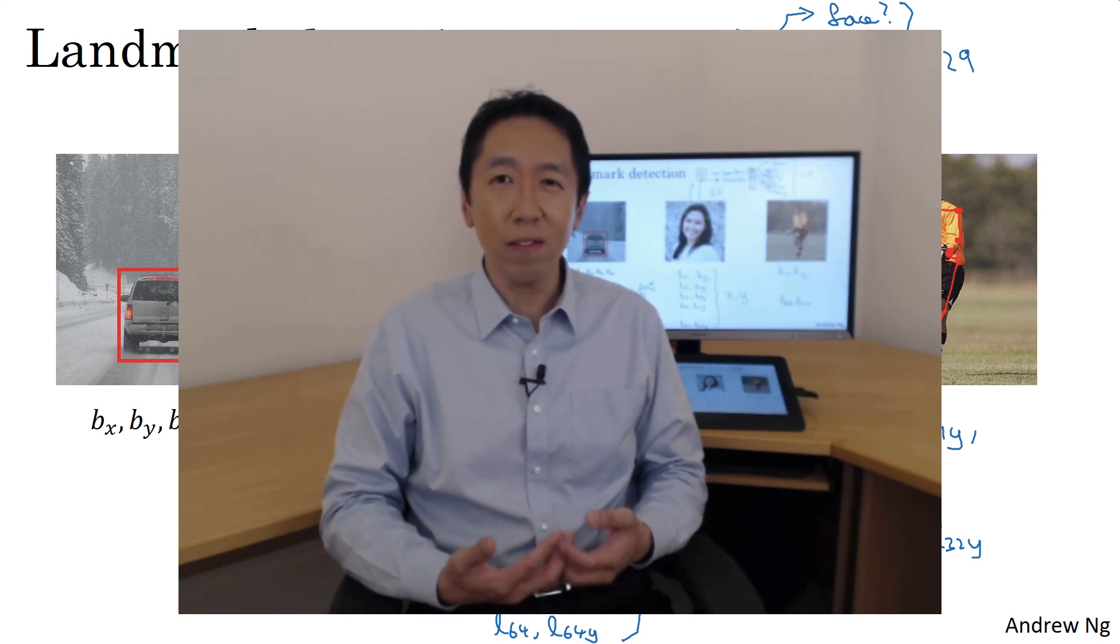But if you can hire labelers or label yourself a big enough dataset to do this, then a neural network can output all of these landmarks which you can use to carry out other interesting effects such as estimate the pose of a person, maybe try to recognize someone's emotion from a picture, and so on. So that's it for landmark detection.